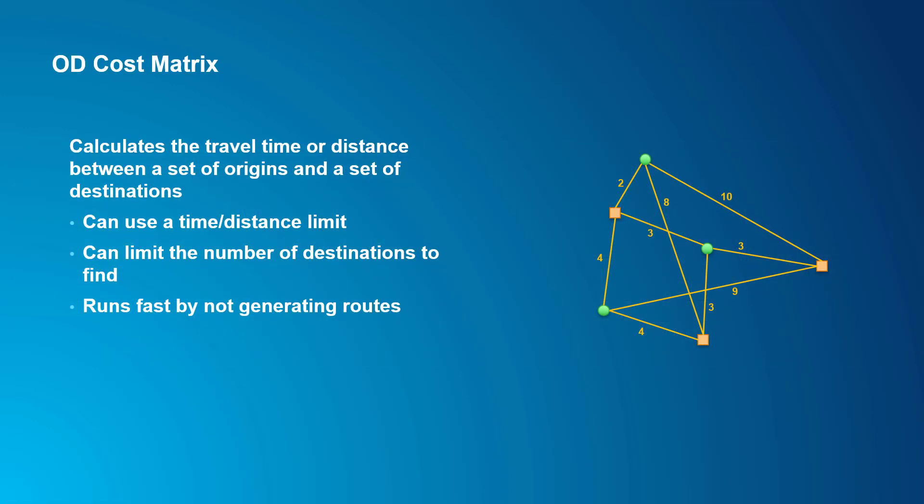For the route solver, we were talking about travel time between one specific location and another. But a lot of the time what we care about for public transit analysis is calculating travel time between large sets of locations — for example, how long it takes every person in the city to get from home to work by transit, or how many jobs people in each census block can reach within a reasonable commute time. The OD cost matrix solver is the right tool for this. Origin-destination, or OD cost matrix, finds travel time or distance between sets of origins and sets of destinations, with the ability to use a time or distance limit and limit the number of destinations per origin. It runs faster than the route solver because it doesn't store the actual path taken.